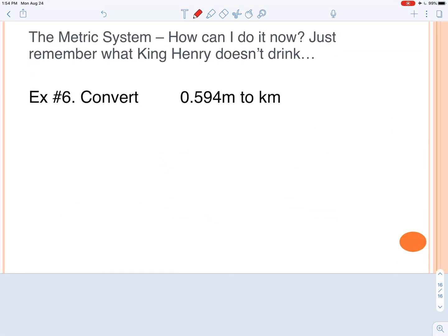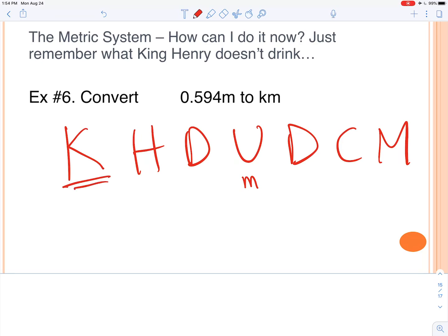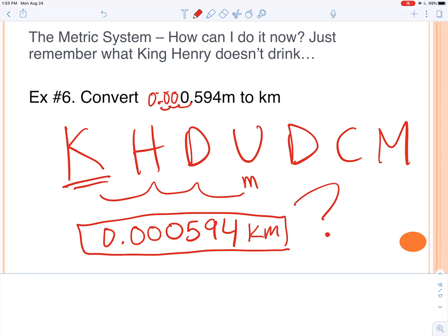All right, and lastly, we've got meters to kilometers. So King Henry doesn't usually drink chocolate milk. That's going to help us. Our meters, we start here, and we're trying to get to kilometers. So what's going to be our final answer? All right, we want to move our decimal three spots to the left. So it's going to be 0.0, so I'm going to add more zeros here. 1, 2, 3. So 0.000594 kilometers. All right, and that should be it.